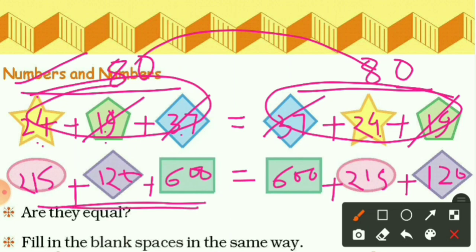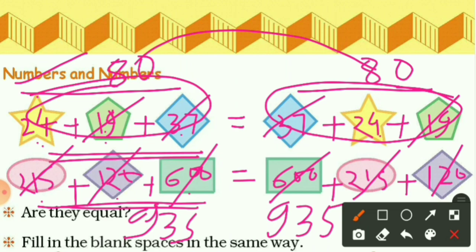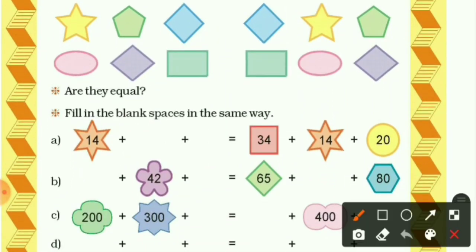Now come to the second one. On the left side we have 215 plus 120 plus 600, and their sum is 935. Similarly, on the right side we have 600 plus 215 plus 120, and their sum is also 935. You can observe: 215 is on both sides, 120 is on both sides, and 600 is on both sides. So LHS equals RHS.